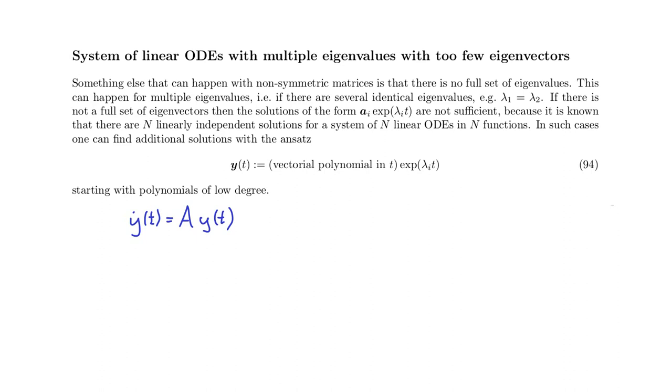Another complication that may occur is that matrix A doesn't have a full set of eigenvectors. A simple example of that would be this matrix.